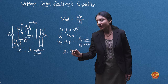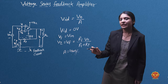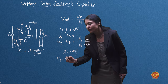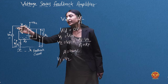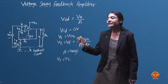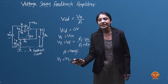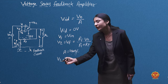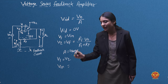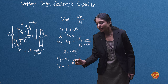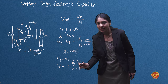Since A is a large value, we can know that V1 is equal to V2 in terms of input differential voltage. Therefore, V1 equals VIN equals V2, where V2 equals R1 times the output voltage VO divided by R1 plus RF.